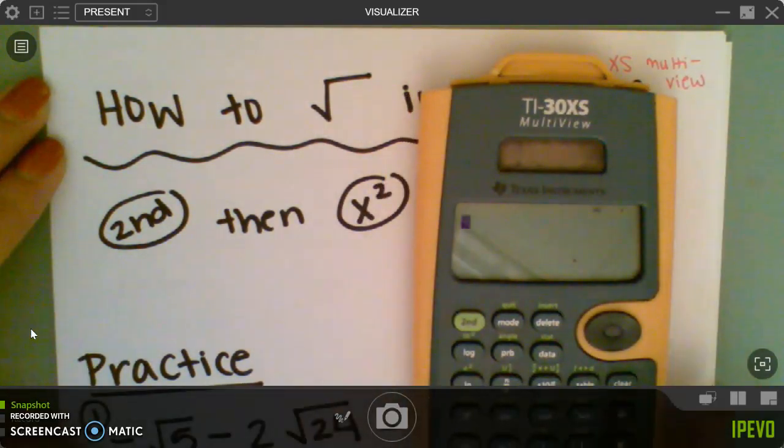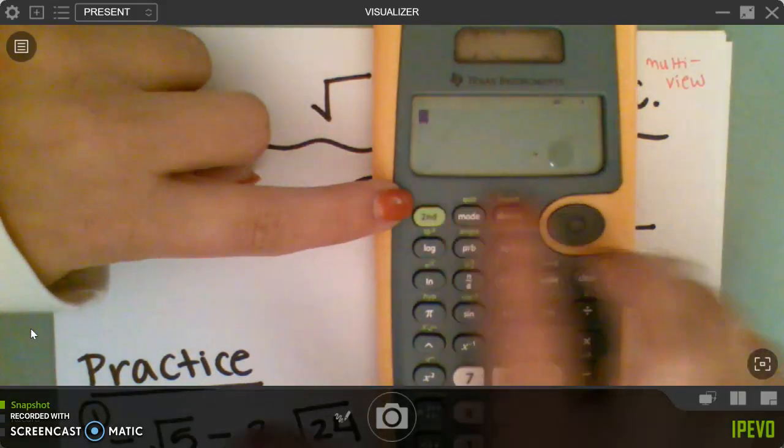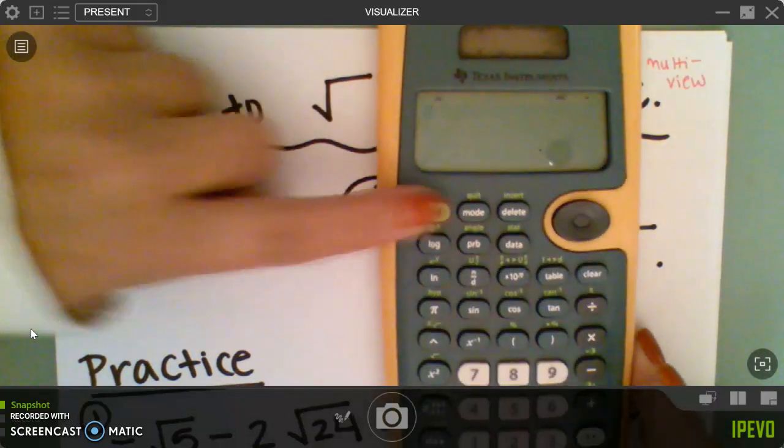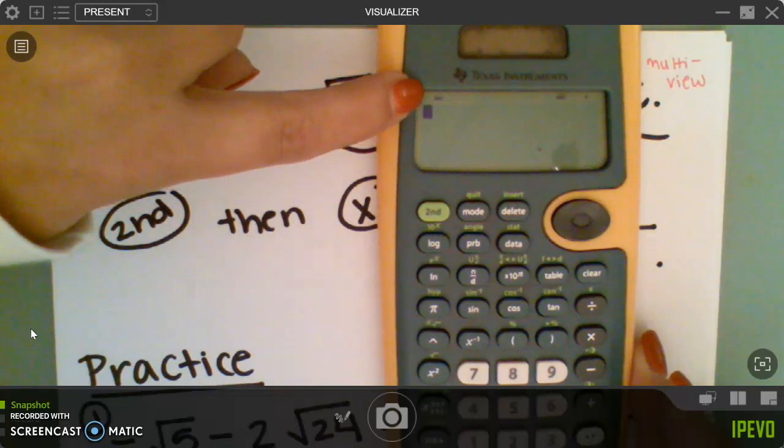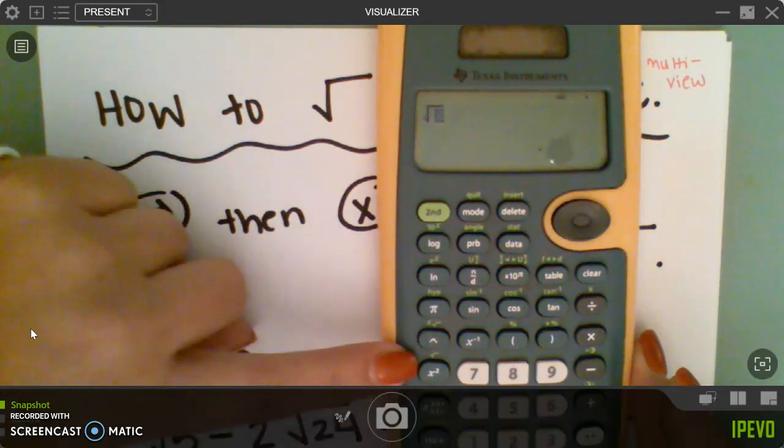So you turn it on, and then this is the second button right here. It gets you all the little green logos on the calculator. So I'm going to press that first and it shows up on the top that I've pressed second, and then down here x squared has the root above it, so that's how I get the square root.